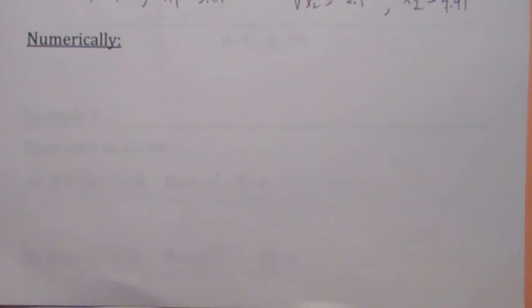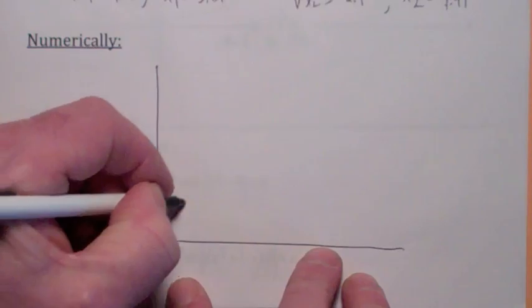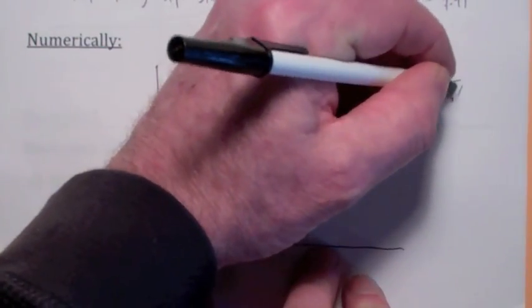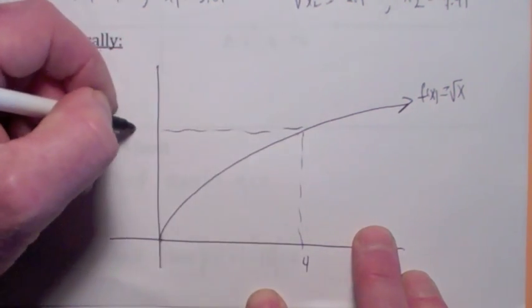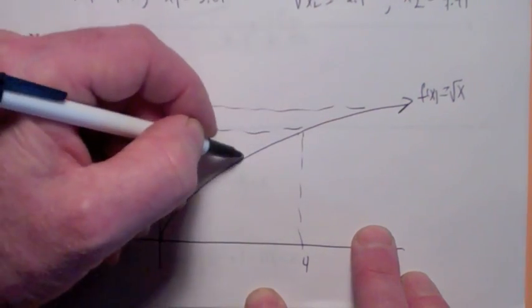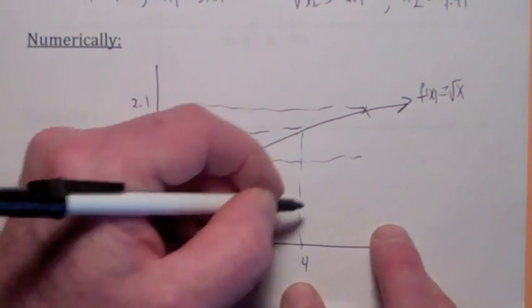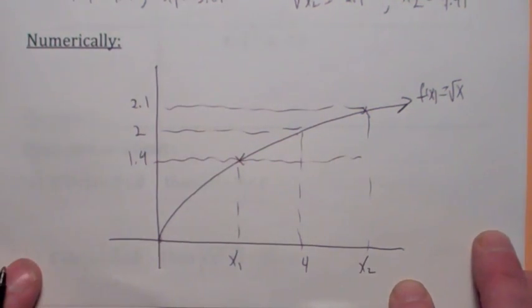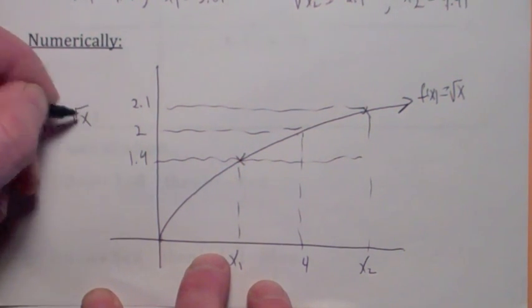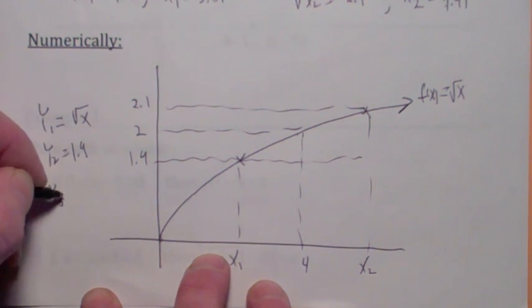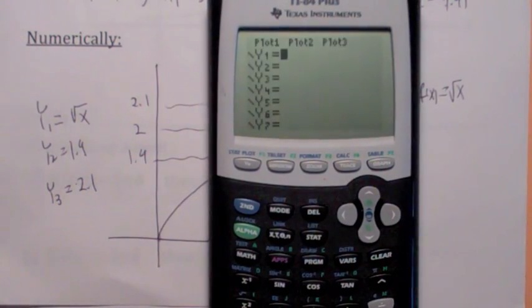There are going to be some times when you might not be able to solve algebraically. Let me show you how to use your graphing calculator to do the same thing. Anyway, let me redraw this picture real quick. This is f of x equals square root of x. And we're talking about the limit as x goes to 4 equaling 2. Again, same thing. This is 2.1. This is 1.9. And I could find x1 and x2 using the intersect feature as well. Let's talk about that.